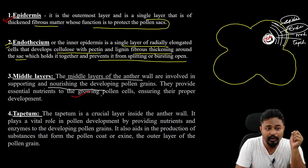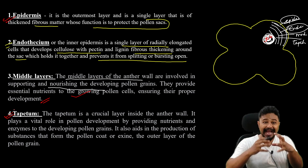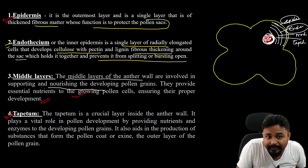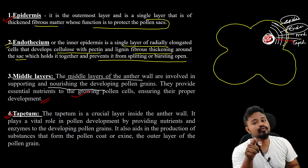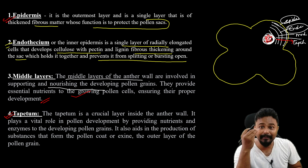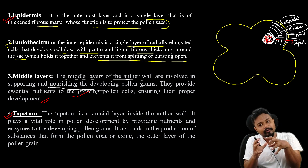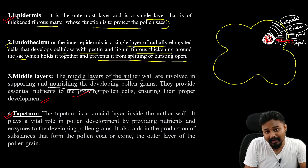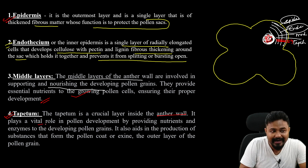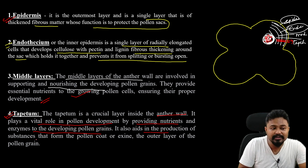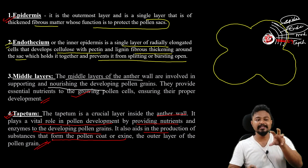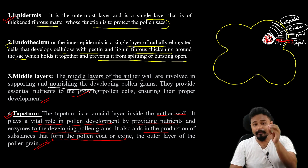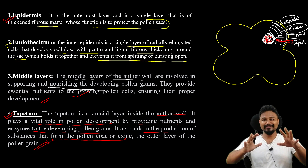The middle layer provides essential nutrients to the growing pollen cells, ensuring their proper development. The tapetum directly nourishes the developing pollen grains. I hope you have found today's topic clear.